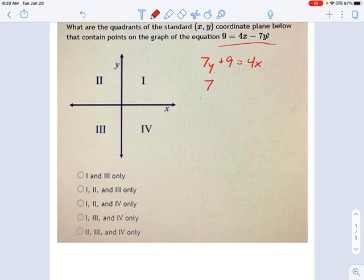Subtract 9 from each side. We get 7y equals 4x minus 9. Divide each side by 7. So we get 4 sevenths x minus 9 sevenths.